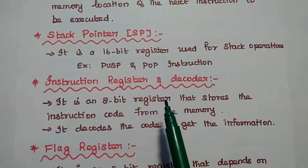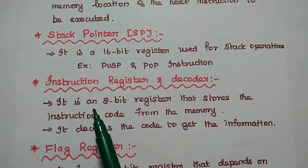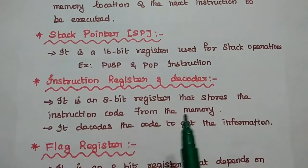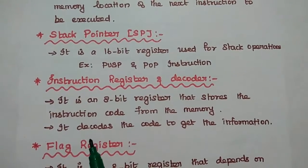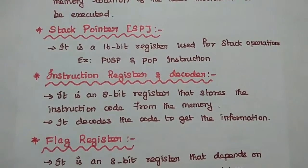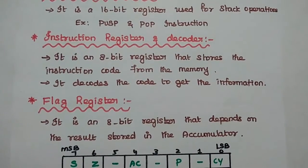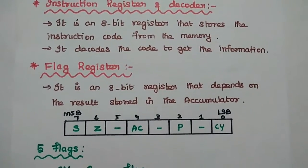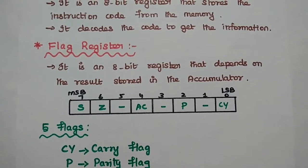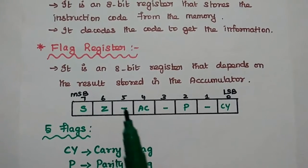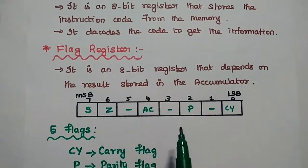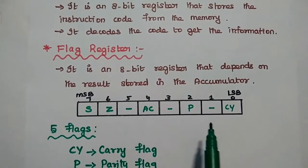The instruction register is an 8-bit register that stores the instruction code fetched from memory. The instruction decoder decodes that code to obtain the required information. The flag register is an 8-bit register whose bits are affected by the result of ALU operations stored in the accumulator.